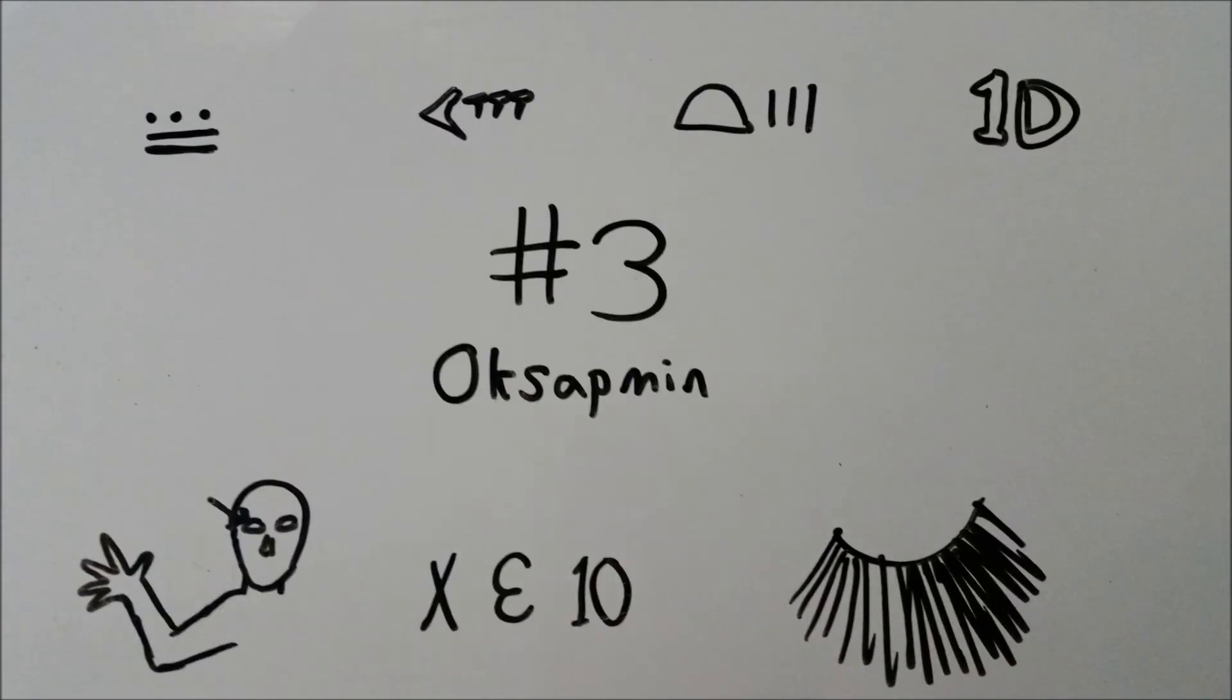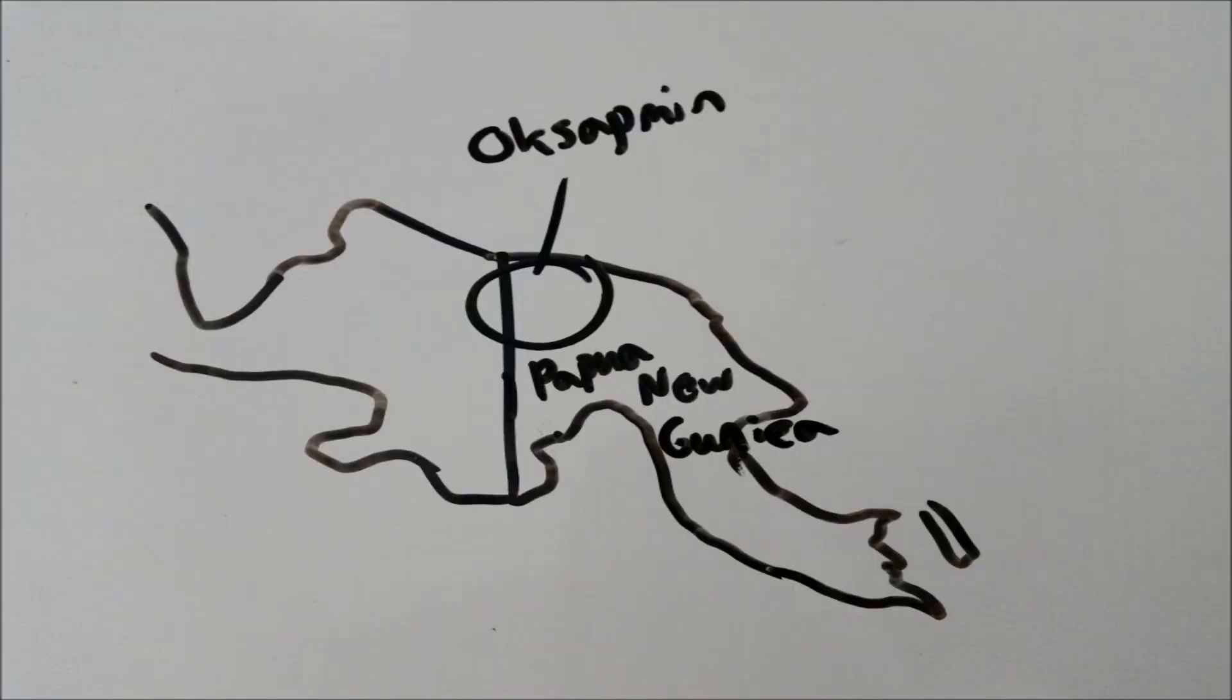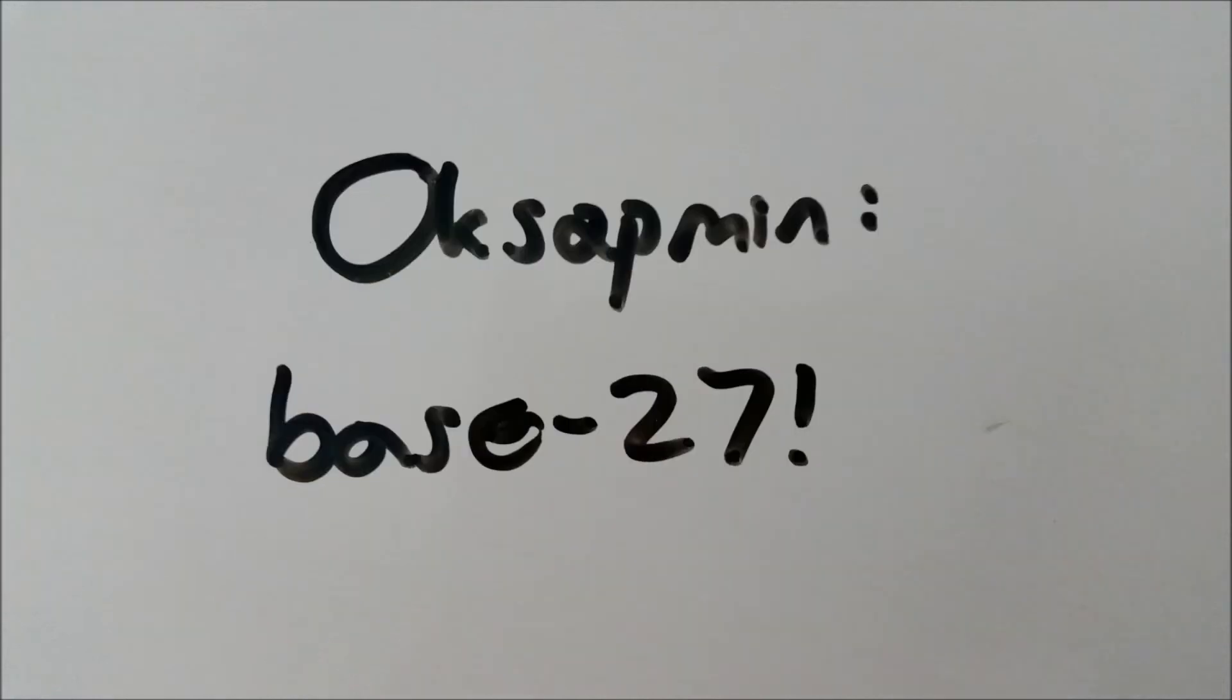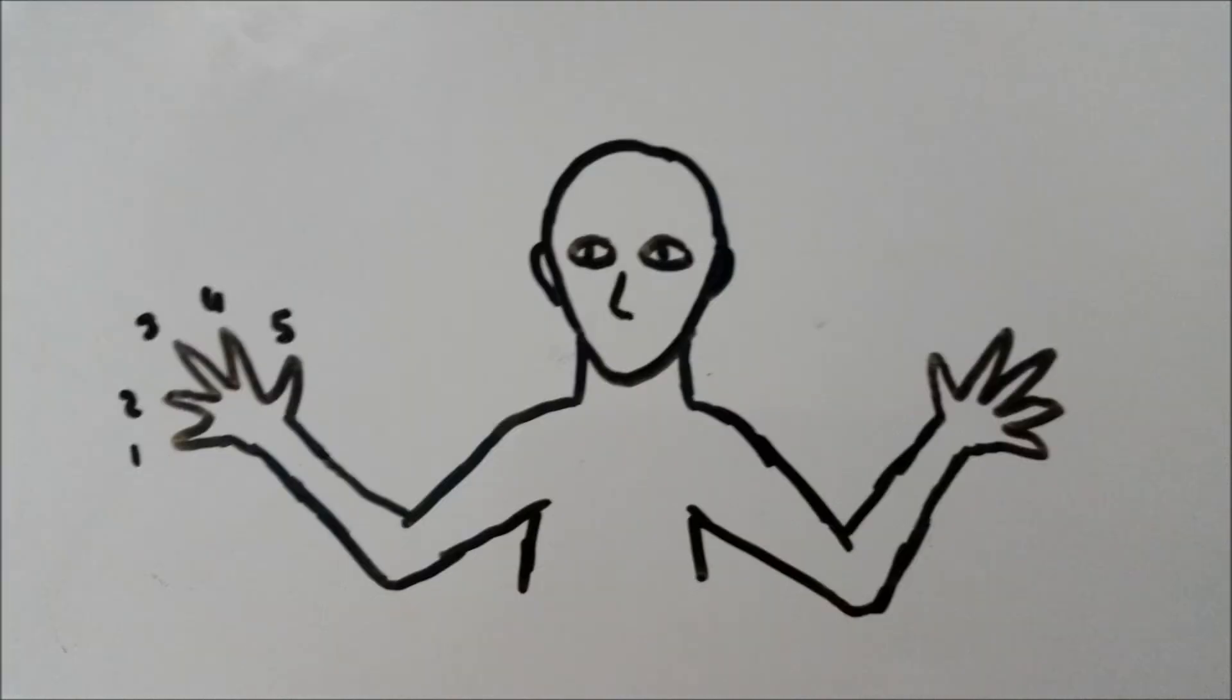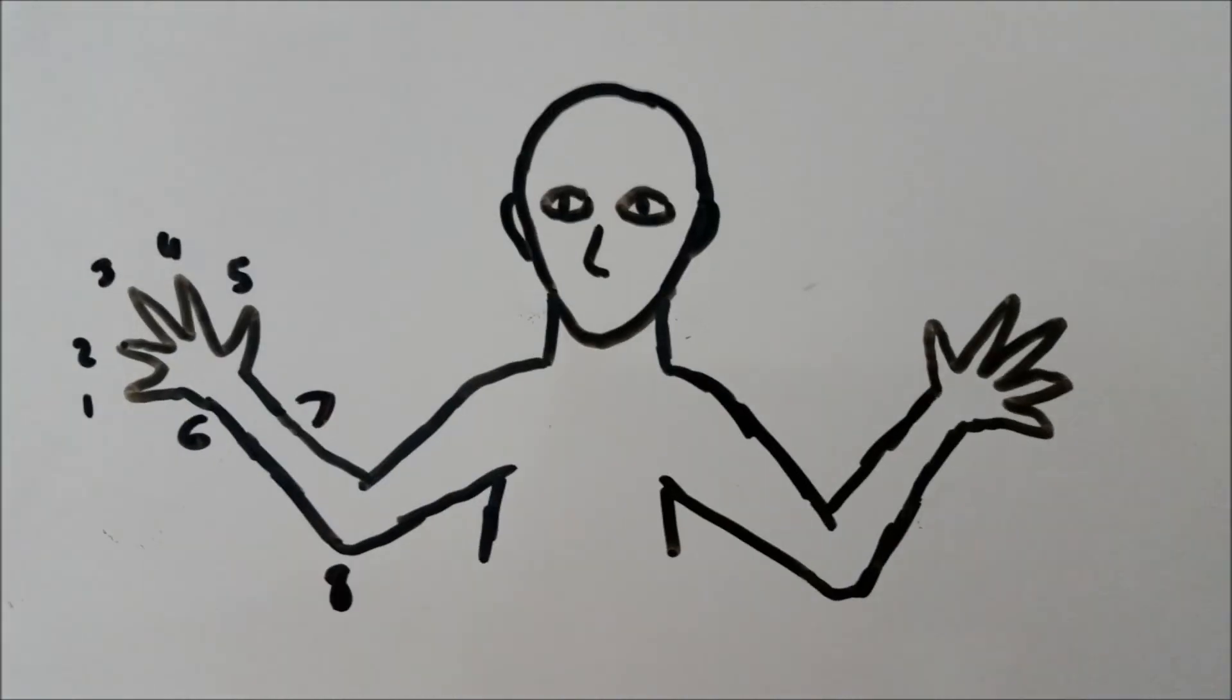Number 3, Aksatmen. On the island of Papua New Guinea, there is a tribe of people called the Aksatmen who developed a base 27 number system. That sounds oddly specific, but it actually is a physical representation of numbers. In order to determine a number, you point at a specific part of your body which is laid out in order as all five fingers on one hand, then the wrist, forearm, elbow, arm, shoulder,